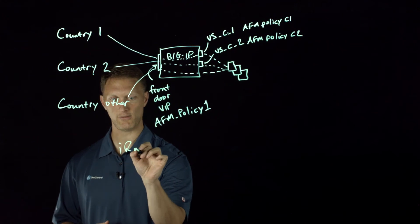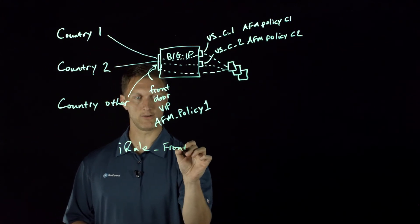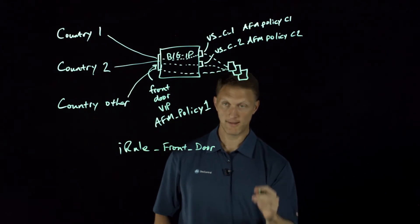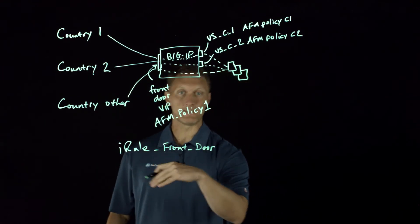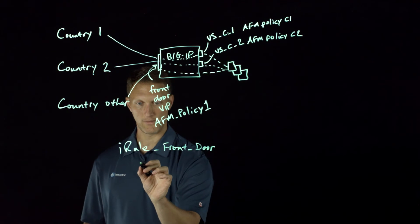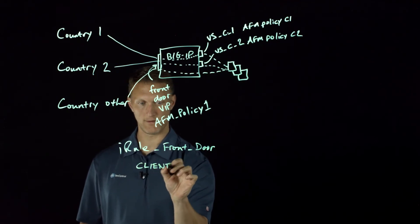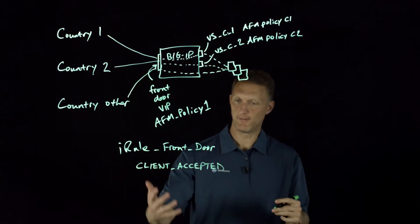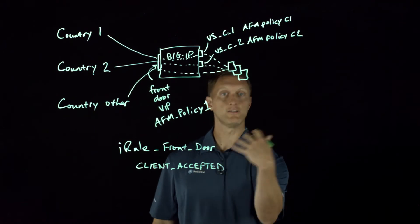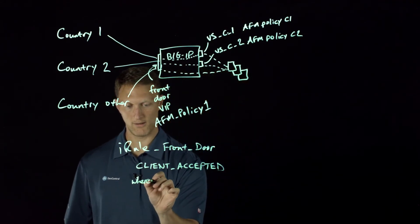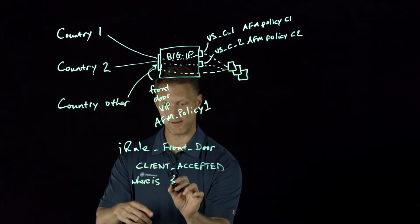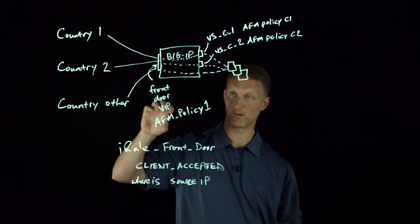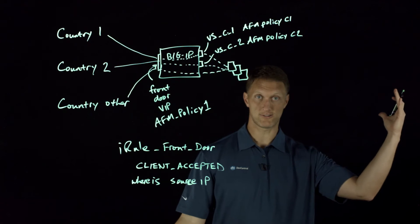I'm going to put 'iRule — front door iRule' right here. I won't go through the exact syntax of the iRule; we can link to that at the bottom part of this video. The idea of the iRule is that when the client accepted event happens — and you know iRules are all event-driven — when the client accepted event fires, you're going to do a couple of things. You can use a 'whereis' command. The whereis command, based on the source IP address, gives you a whole bunch of information.